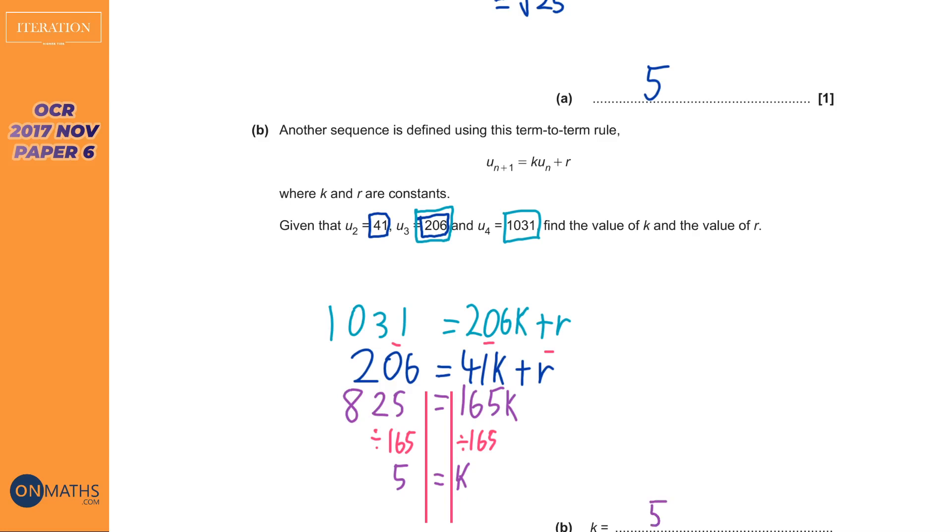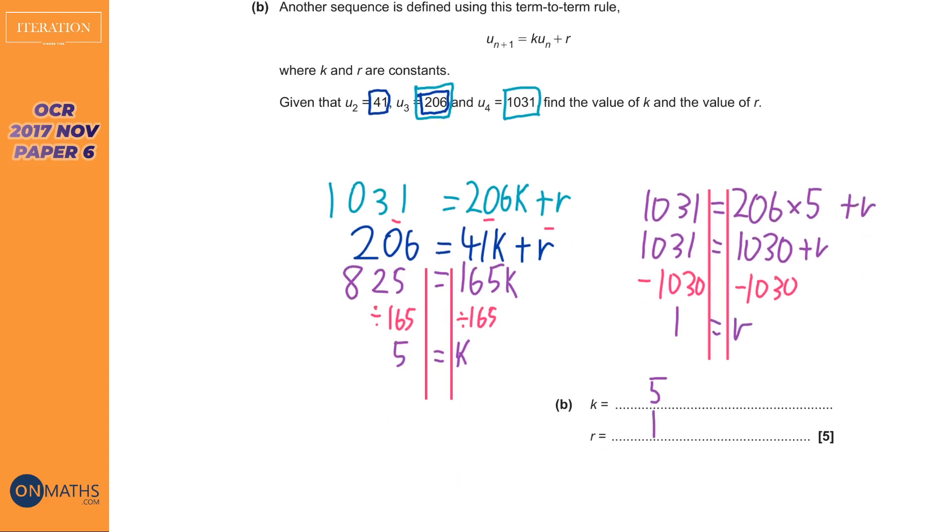Then we're going to put the k into one of these. I'm just going to pick the first one and find out what r is. So 206 times 5 is 1030, and then take away the 1030 from both sides and obviously we've got 1. So r equals 1. Now as always with simultaneous equations, you could put that into the second formula, the 206 equals 41k plus r, and you actually get 206 when you do 41 times 5 plus 1.